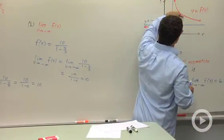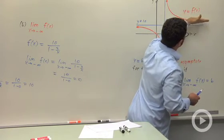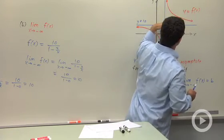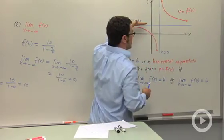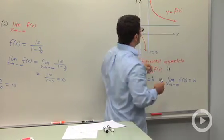As x approaches infinity, the value of the function approaches 10. That means it approaches this horizontal line, y equals 10. That indicates the presence of a horizontal asymptote.